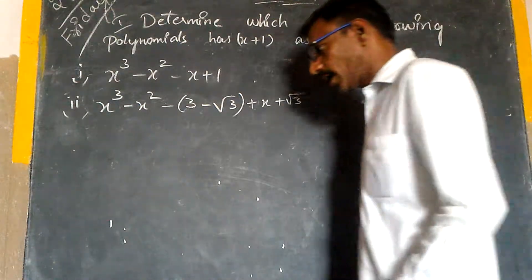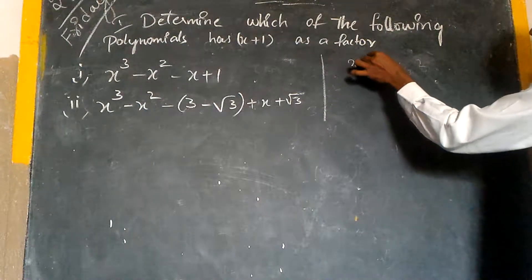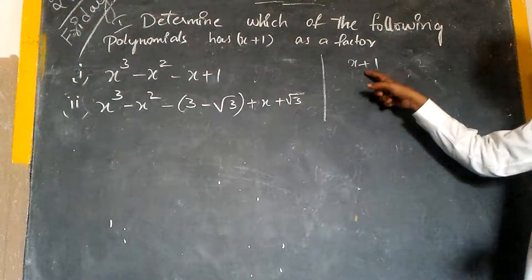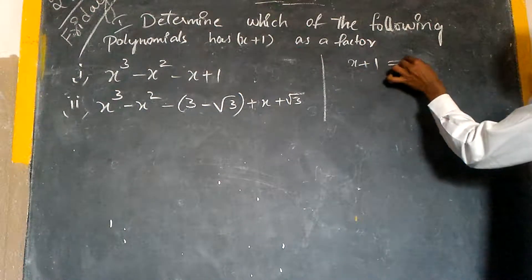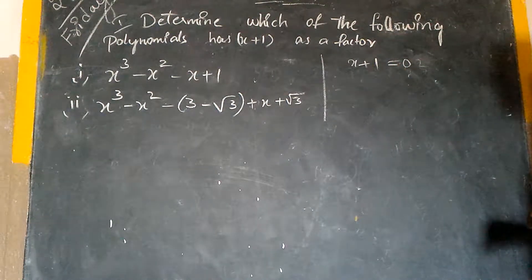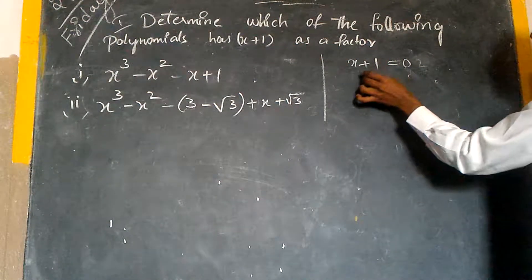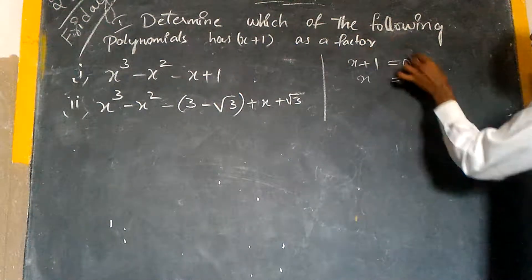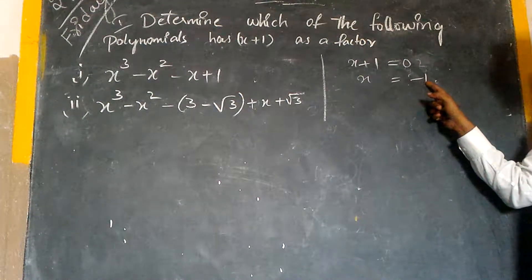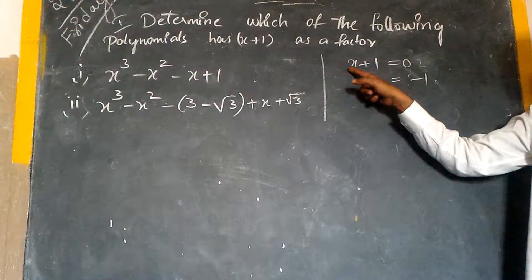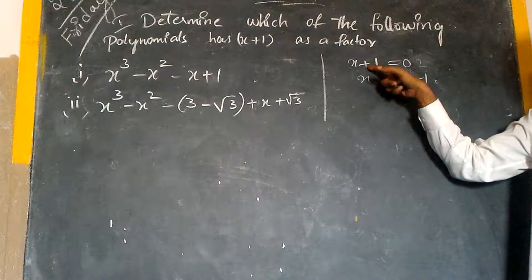Here x plus 1 is a linear polynomial. I would like to set x plus 1 equal to zero to find the zero of this linear polynomial. Then x is equal to minus 1, because plus 1 goes to this side as minus 1. When we substitute minus 1, if it gives zero, that is the reason it is the zero of this linear polynomial.